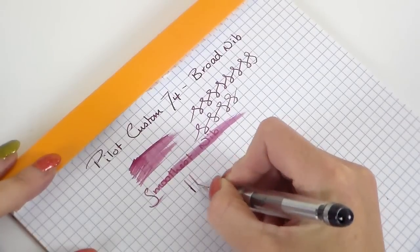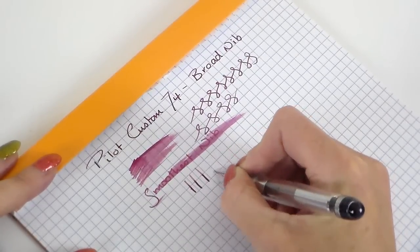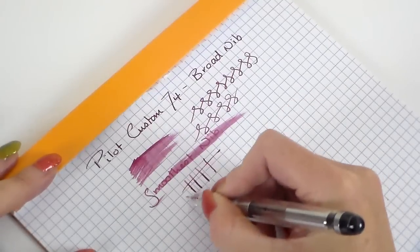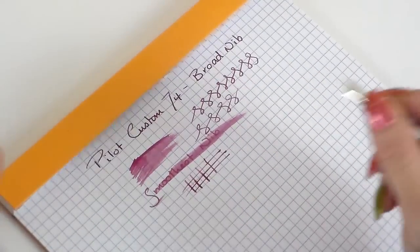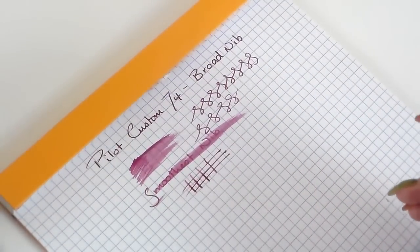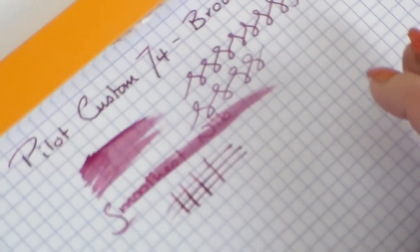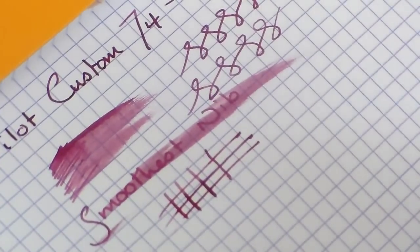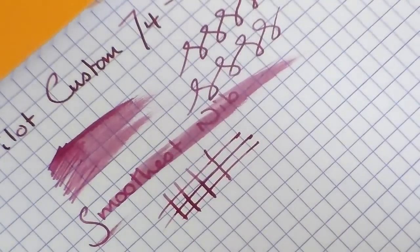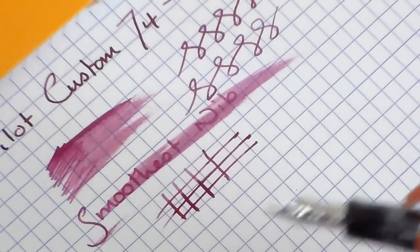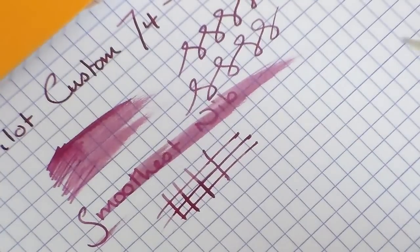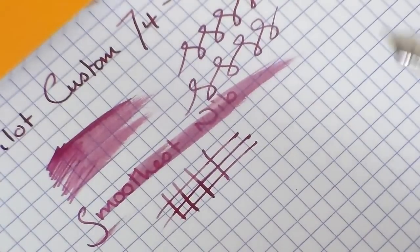There's no line variation. I wouldn't expect it to have any line variation. This ink, whatever it is, does give some really nice shading actually. As you can see there. So, it's a nice ink. It would be interesting to know what it is actually. As I say, there's nothing more I can sort of say. It's a broad nib.